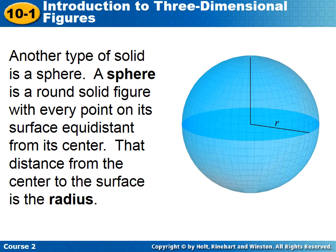Another non-polyhedron solid is a sphere. And you're probably pretty familiar with spheres in the real world. But mathematically, a sphere is a round solid figure with every point on its surface equidistant from the center. And that distance from the center out to the surface is the radius. In this example diagram we've drawn here, there are a couple of radii drawn in. But really, from that center out in any direction, the distance is going to be the same.